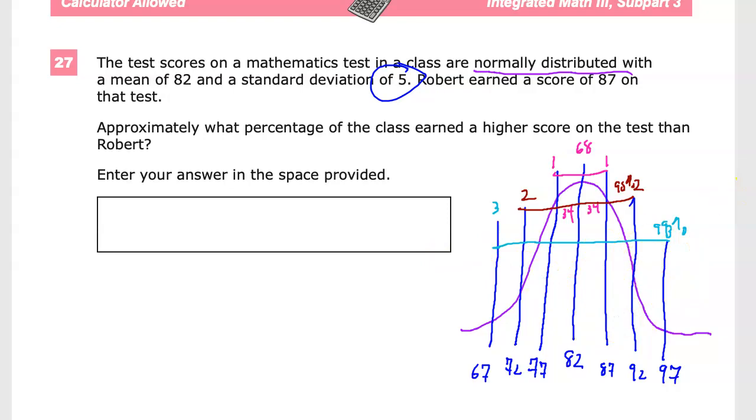But we don't really need to know that here. We're really only working with one standard deviation, because Robert scored an 87, which, as we can see, is the value of the standard deviation, of a single point of standard deviation. So, he's really in here.